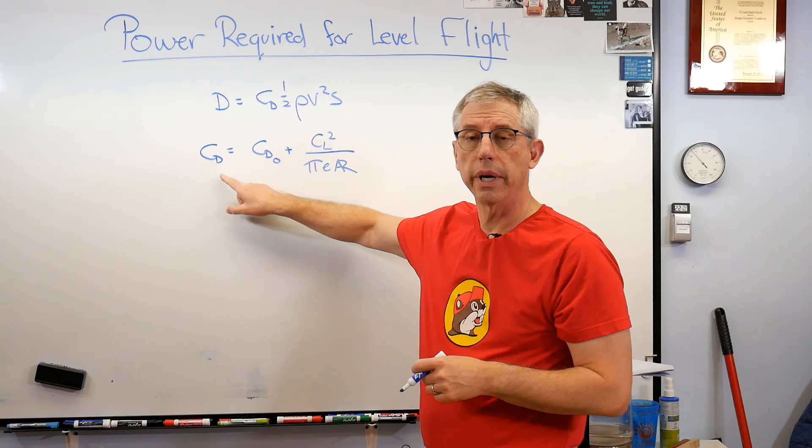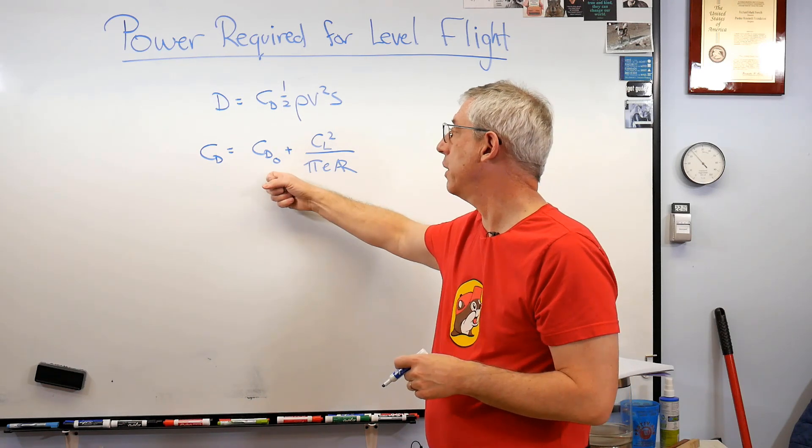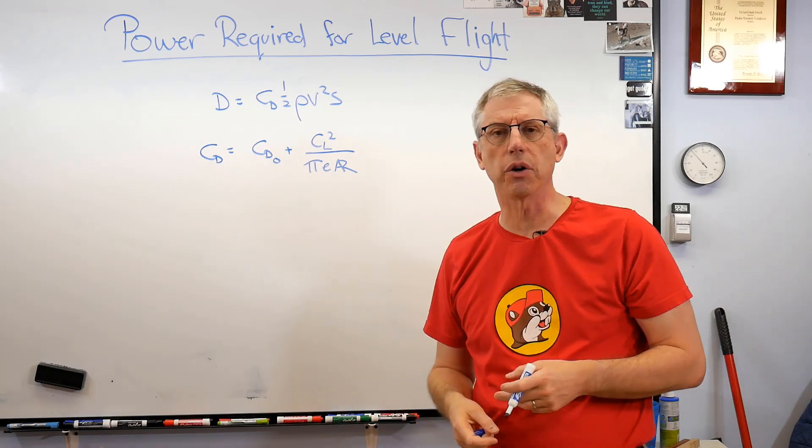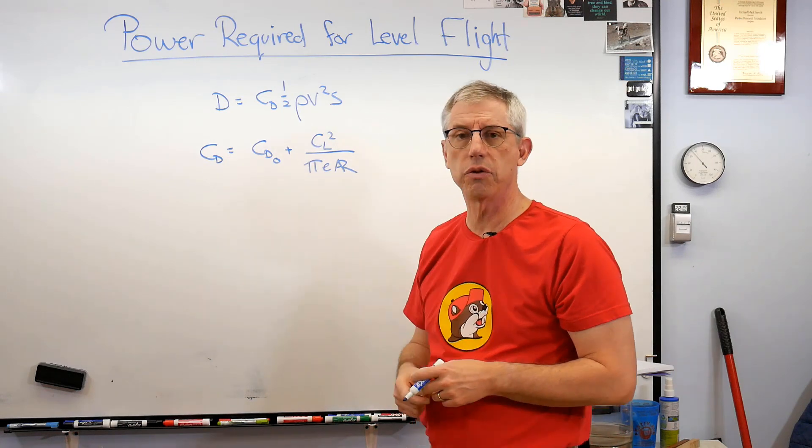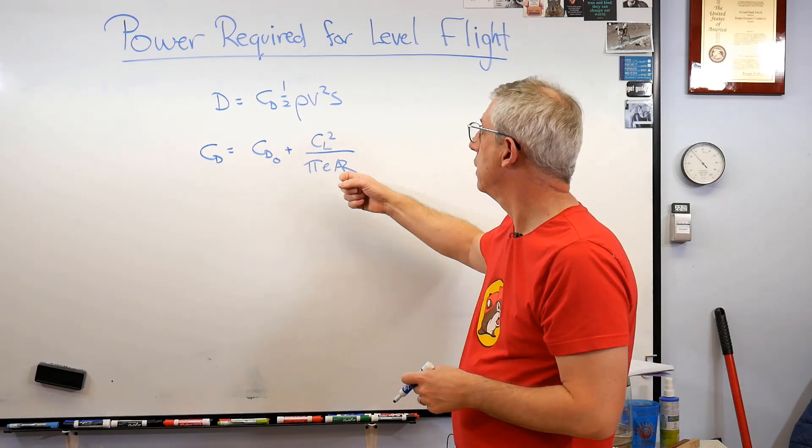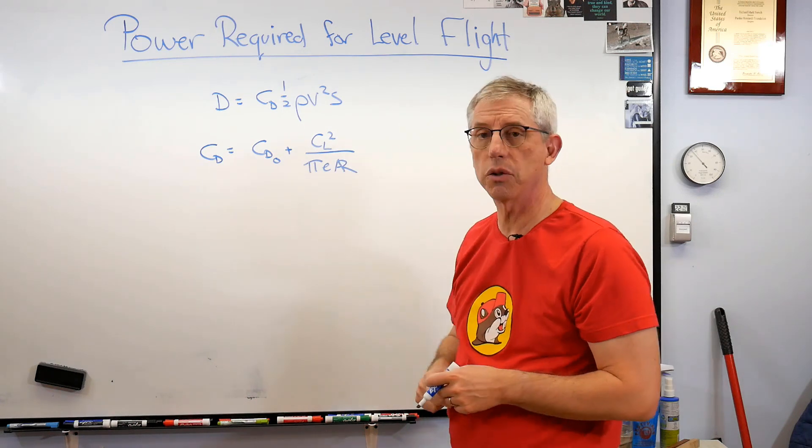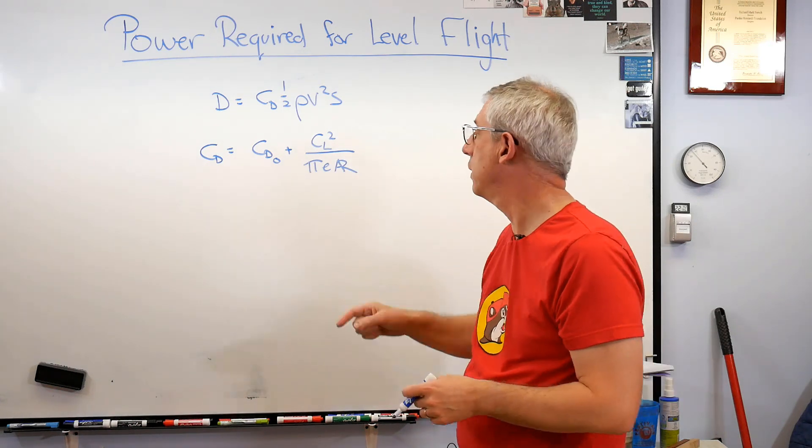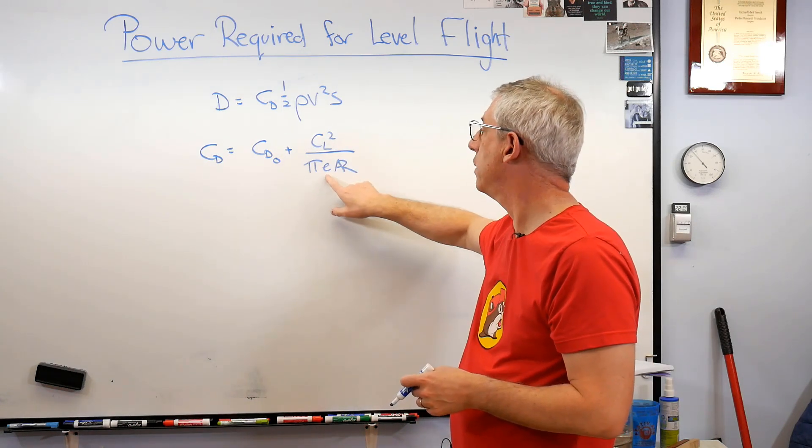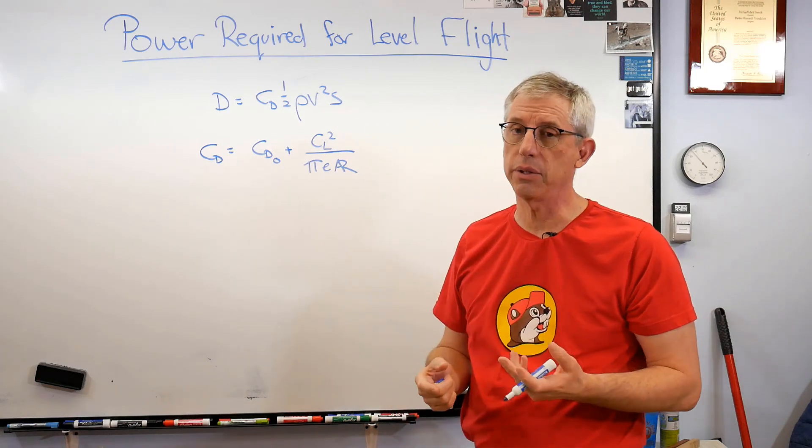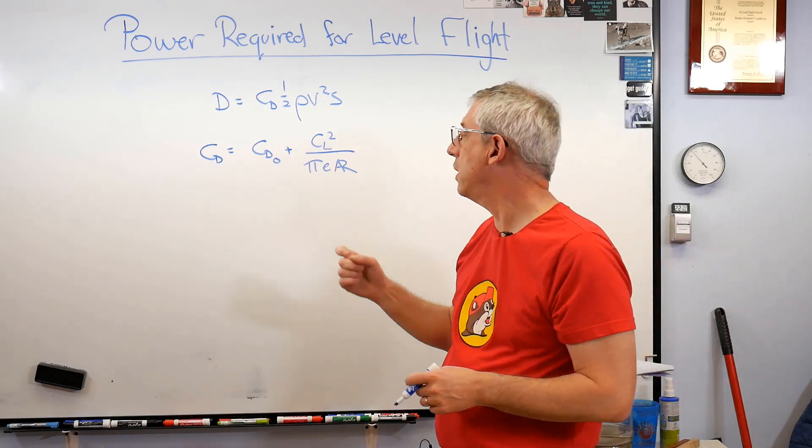Okay so the total drag is what we're calling the form drag and that's CD zero, that means it's the coefficient drag at zero lift, times this thing right here. This is a parabola, that CL squared, the coefficient of lift squared divided by pi E AR.